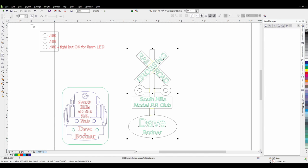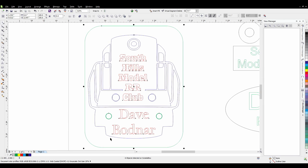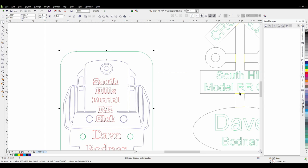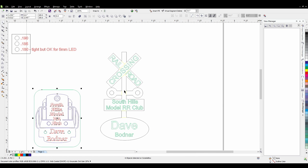This is CorelDRAW, and as you can see I have three different items on the screen right now. This is a test cut that I did to determine the best size hole for these five millimeter LEDs. This is a diesel engine name badge that I experimented with. It's got space down here for two three millimeter LEDs for white ditch lights, and of course over here is the name tag for the crossing.